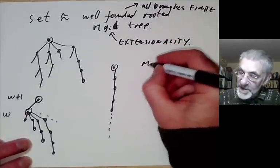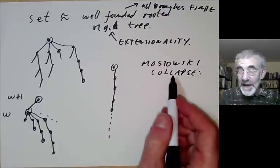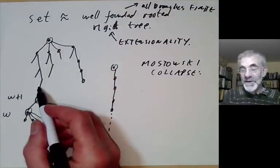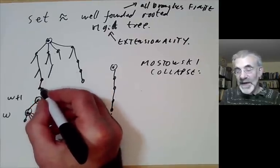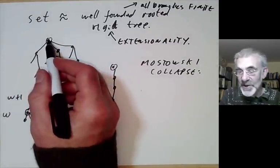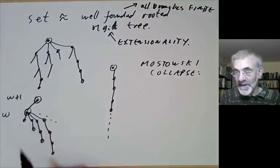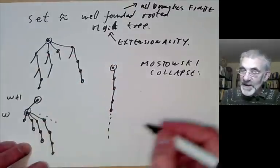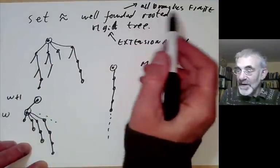Finally, I should mention the Mostowski collapse theorem. The Mostowski collapse theorem roughly says that if you've got a well-founded rooted tree, then you can get a set out of it by starting at the bottom and working upwards. The bottom node corresponds to the empty set; the next node corresponds to the set containing the empty set; and you work your way up assigning a set to each node. You can start at the bottom because the tree is well-founded, and you get a well-defined set because the tree is rigid, so you don't get two copies of anything.